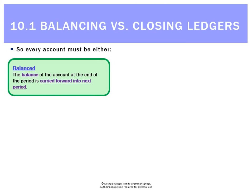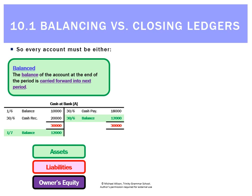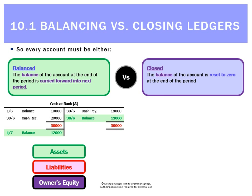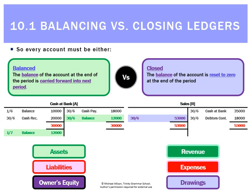That leads us to the fundamental question: what's balancing and what's closing? Balancing is where we balance the account at the end of the period to carry it forward into the next period. Taking cash at bank, we balance that out on the 30th of the 6th and carry it forward on the first of the next month. We're going to do that for assets, liabilities, and owner's equity accounts. Closing is different — that's where the balance of the account is reset to zero at the end of the period. Take sales, for example: it's got a credit balance of $53,000, and we need to reset that to zero by making a debit entry, so that for next period it's blank. We're going to do that for all revenues, expenses, and the drawings account.